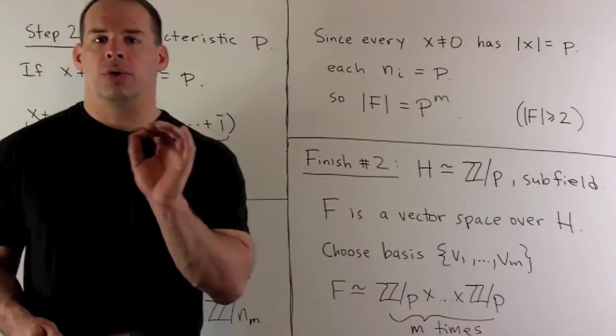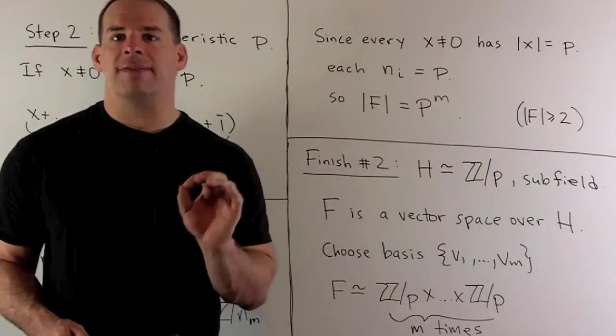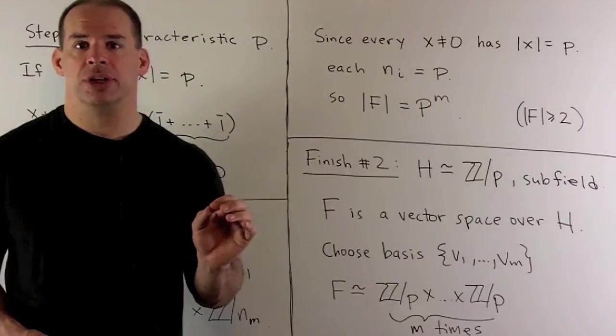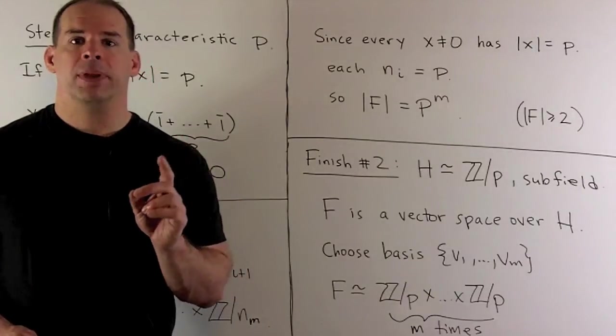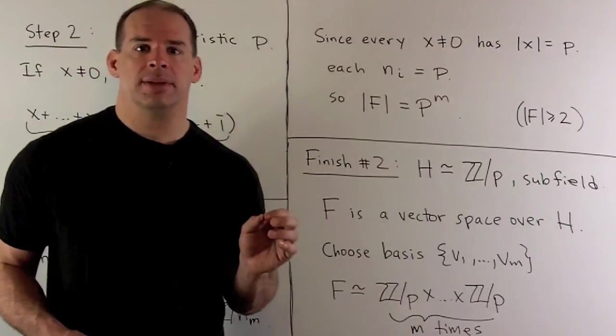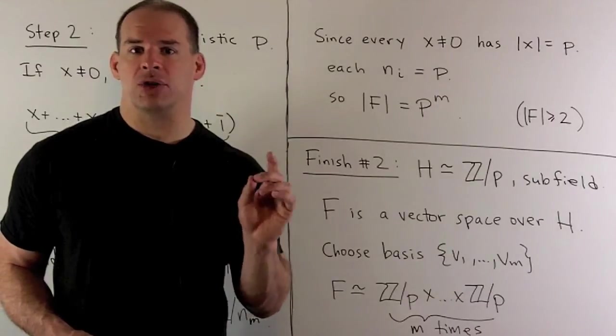And then, you can go through your vector space properties to show that F is going to be a vector space over H. Now, because F has finitely many elements, F is going to be a finite-dimensional vector space over H.